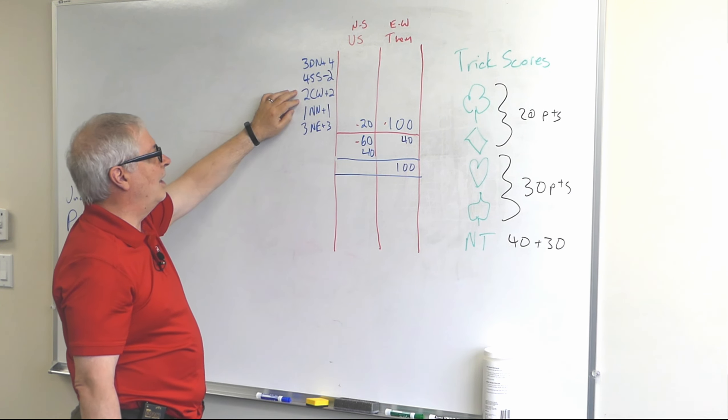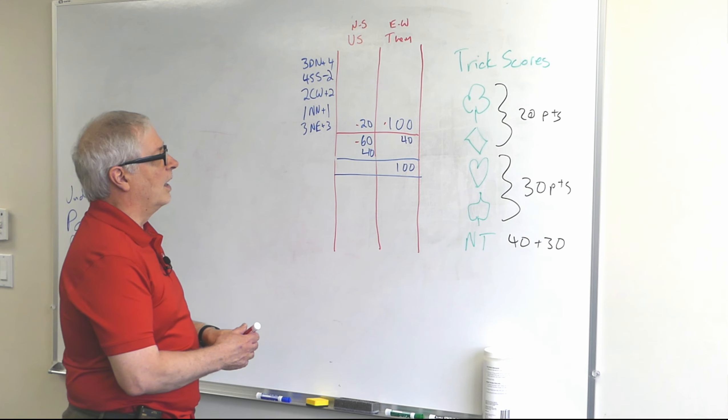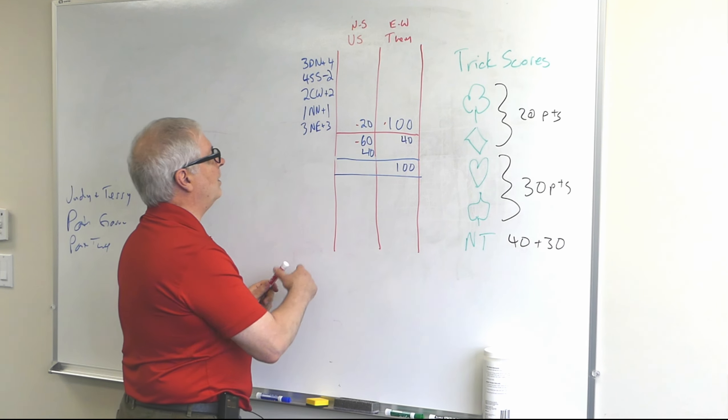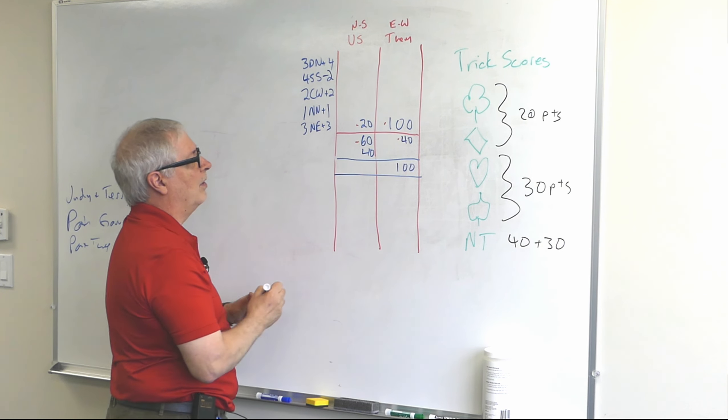The third hand was two clubs by West making two. Clubs, they're 20 points each. They made two so they get 40 points for that and that's below the line.